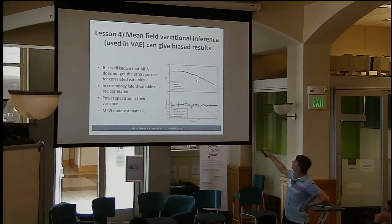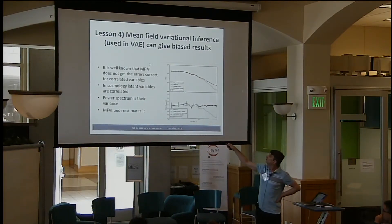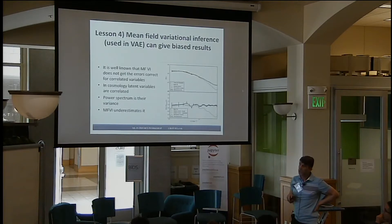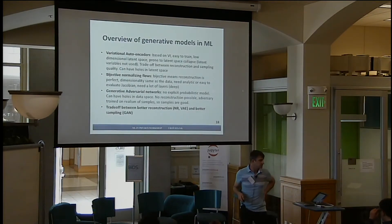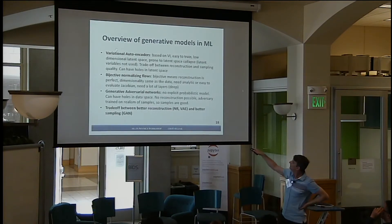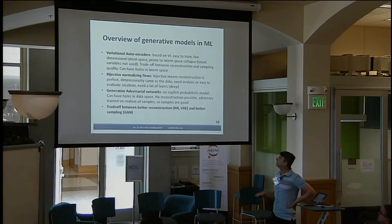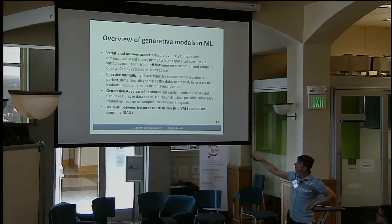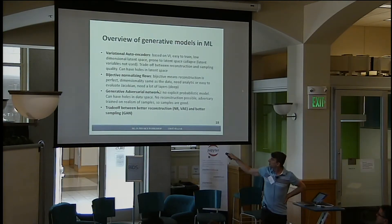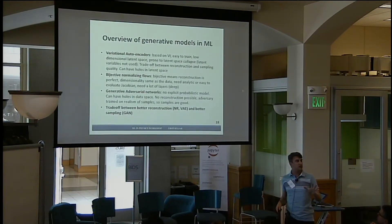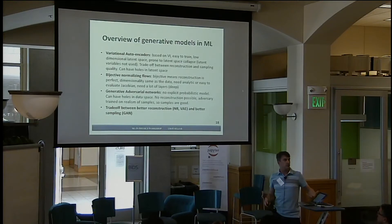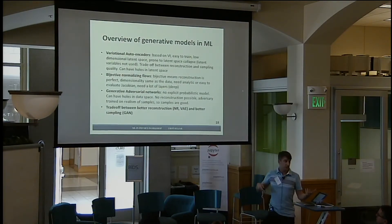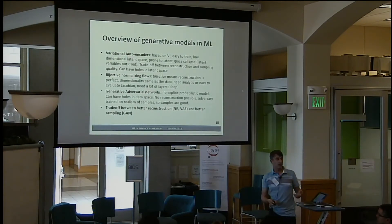Lesson four I'll skip — it has to do with mean-field variational inference, which we argue doesn't give accurate results for cosmology applications. On generative models: there are basically three major classes — variational autoencoders, normalizing flows which are bijective, and GANs, generative adversarial networks. You can think of them as a tradeoff between reconstruction and sampling. GANs do a very good job on samples but can't really reconstruct the data. Bijective flows reconstruct the data perfectly but vary on samples. VAEs are something in between.